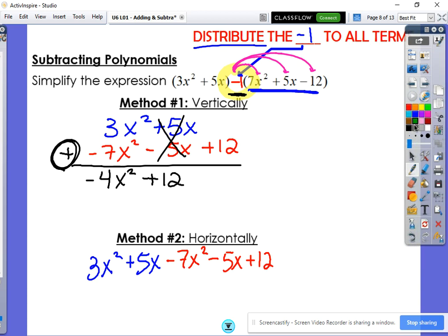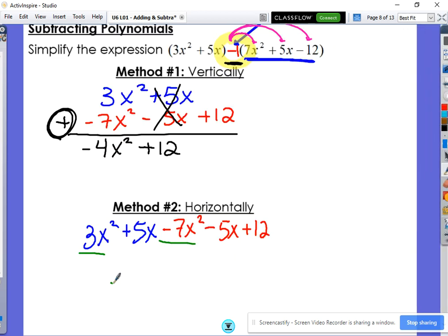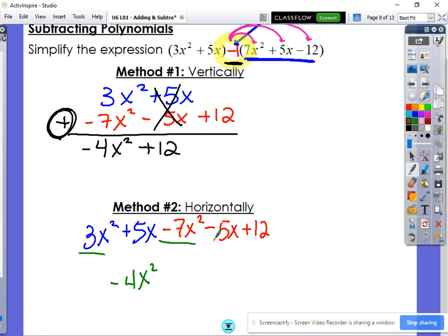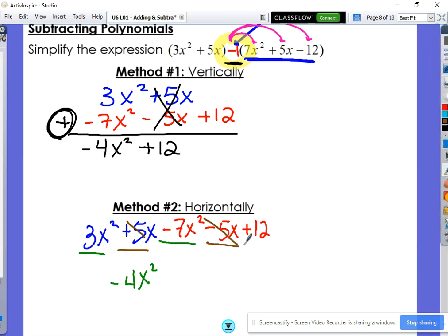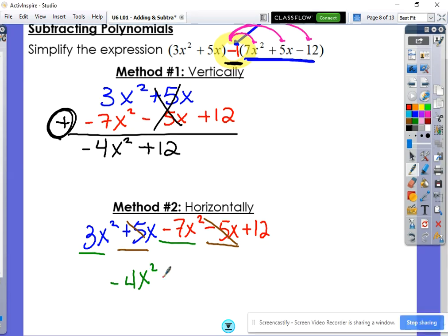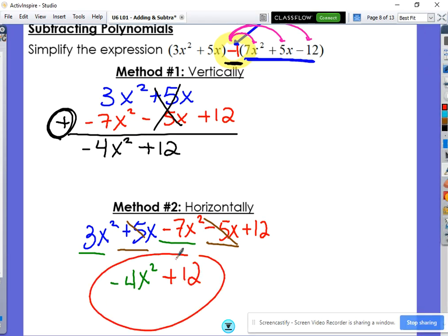And then you're just combining like terms as we normally would. 3x squared with negative 7x squared gives me negative 4x squared. The negative 5x here and the positive 5x, they cancel each other out. So we're simply left with the plus 12 doesn't have anybody.